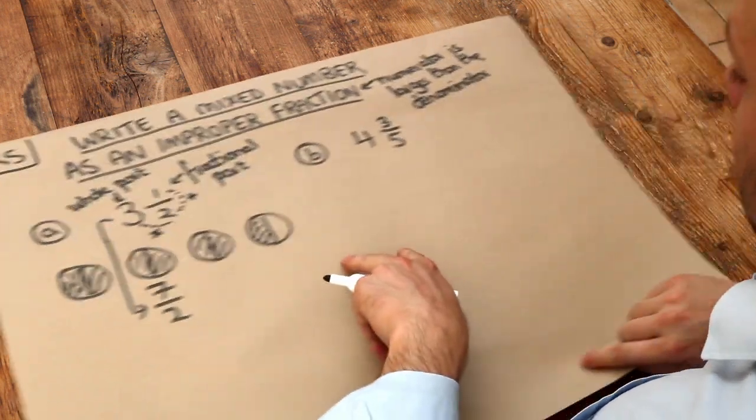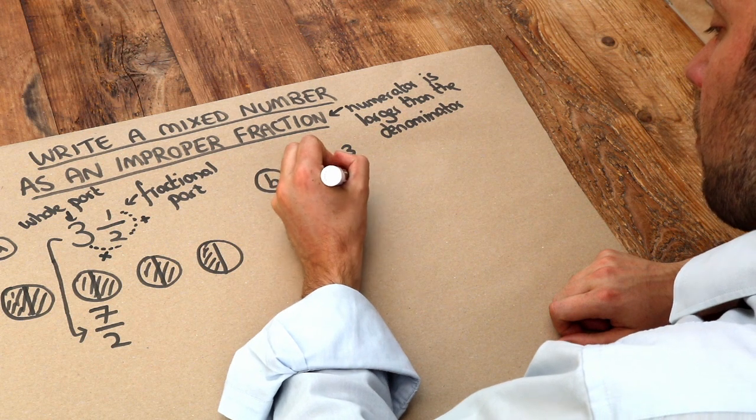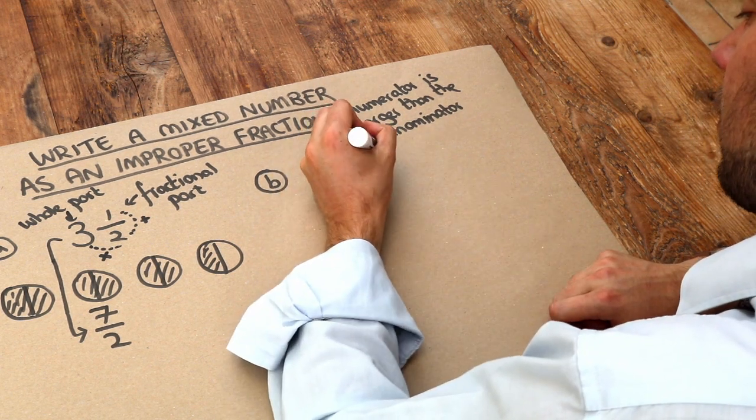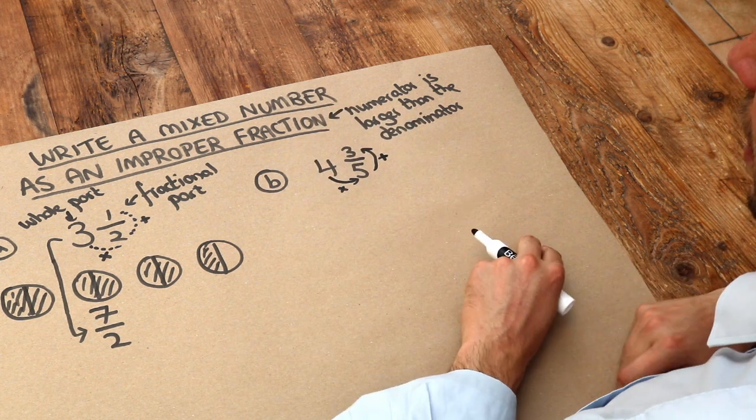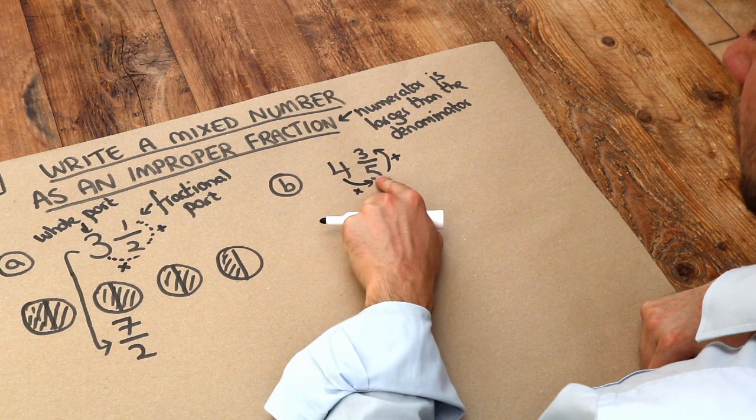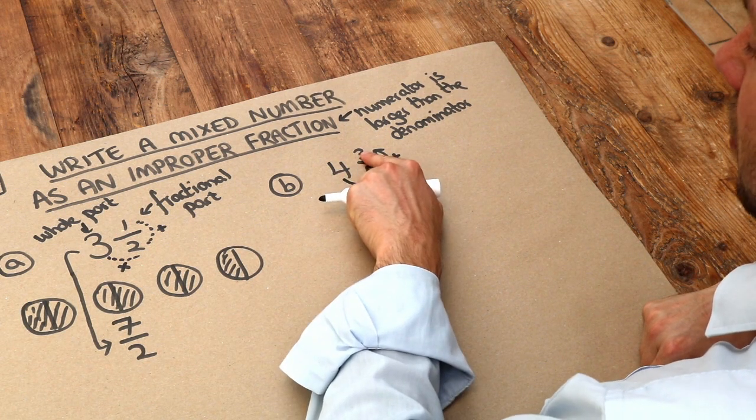So let's use that technique to answer this question here. All we need to do is multiply the four by the five and then add the three, and that gives us the numerator of your improper fraction. So four times five is twenty, and when you add three that's twenty-three.